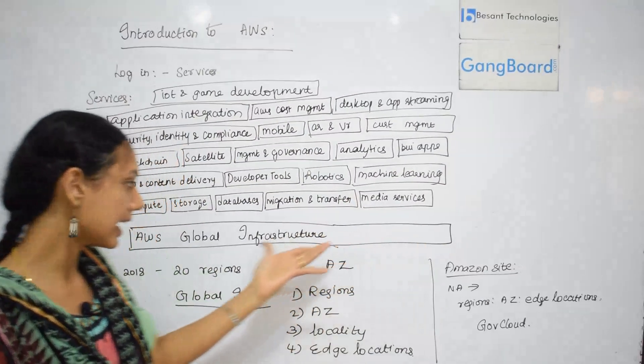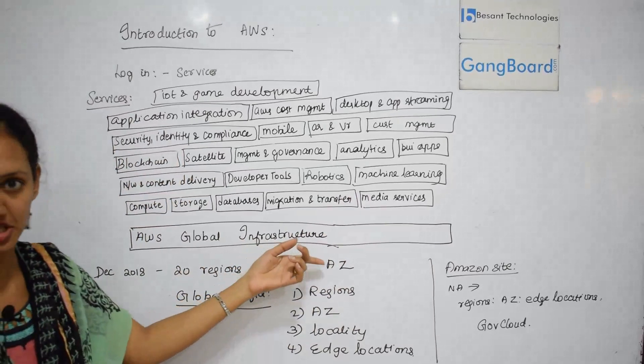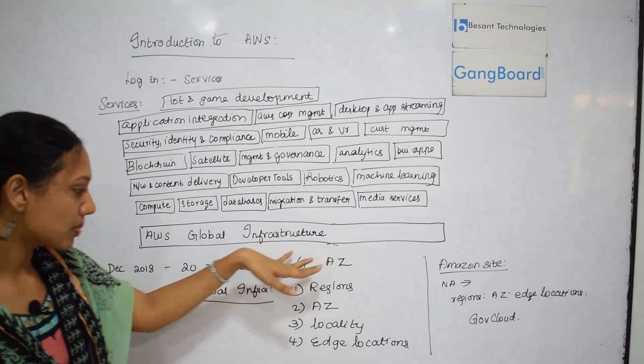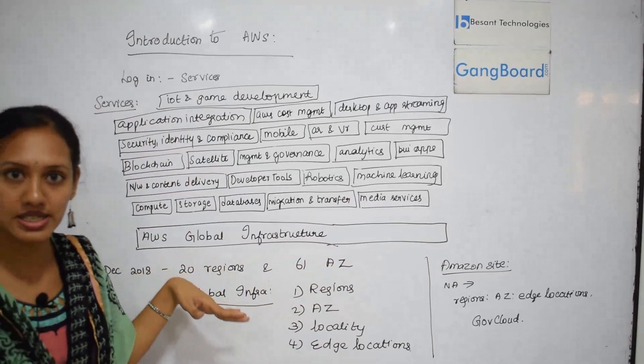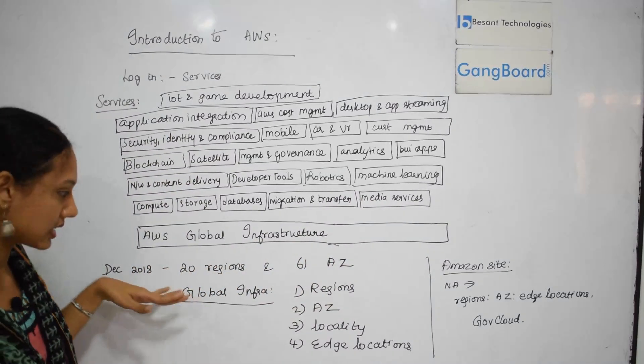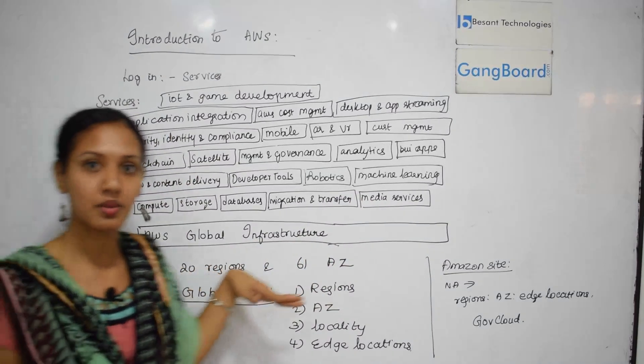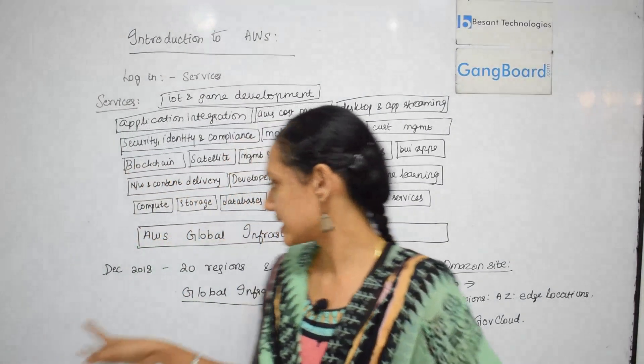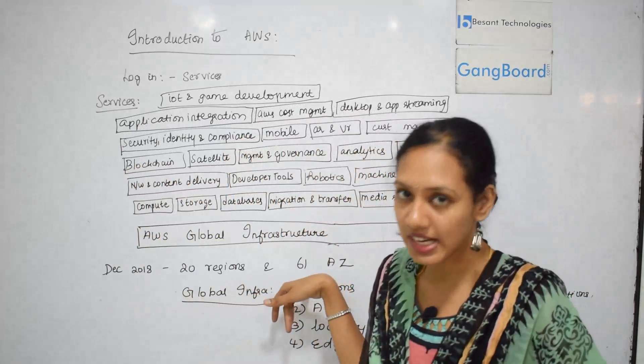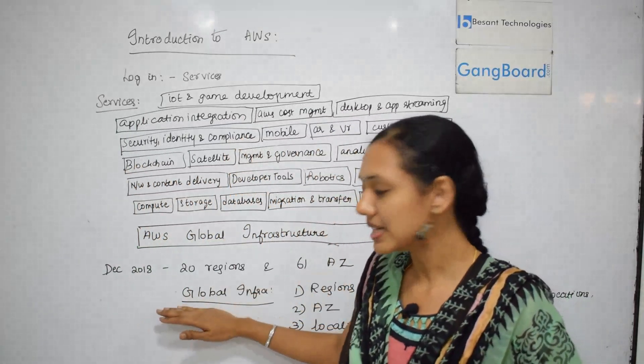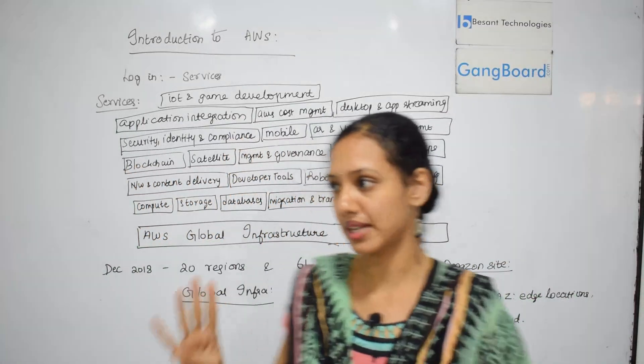Before we move on further, let me talk about the AWS global infrastructure. As of December 2018, AWS has put up around 20 regions and 61 availability zones. The global infrastructure has four components: regions, availability zones, locality, and edge locations.